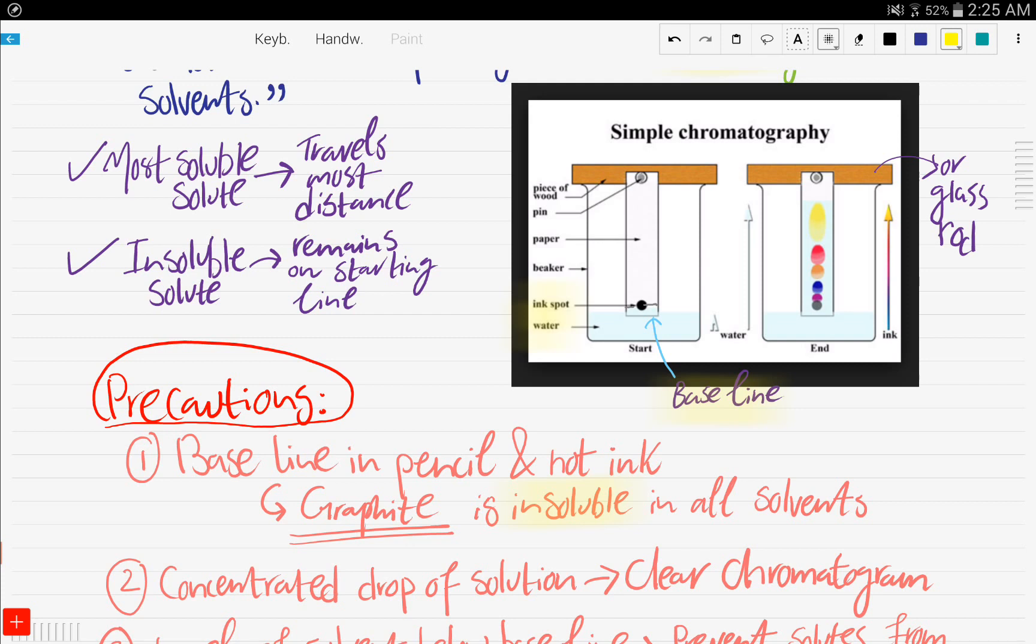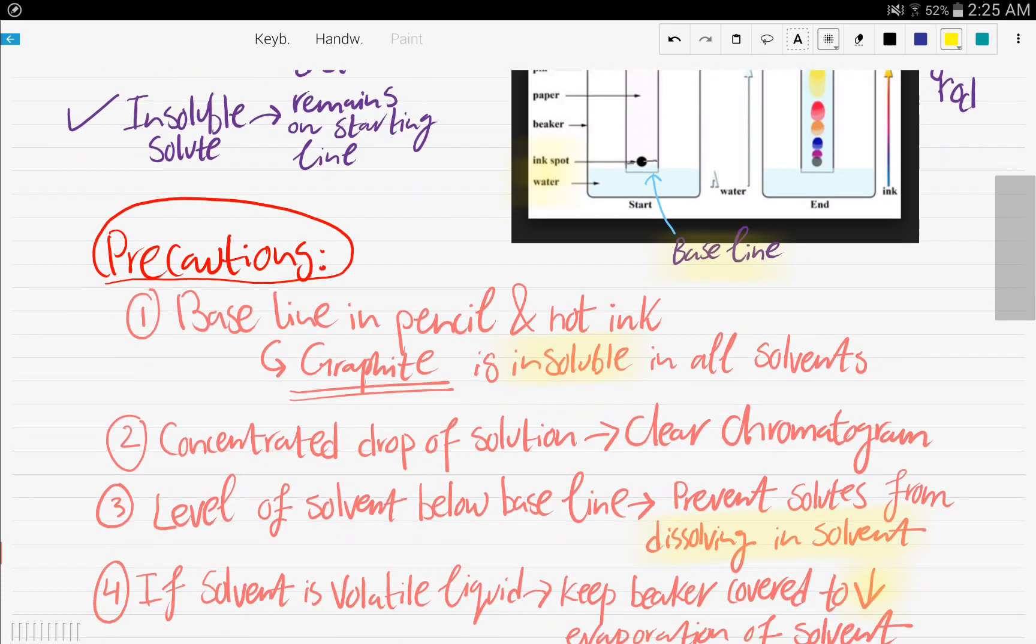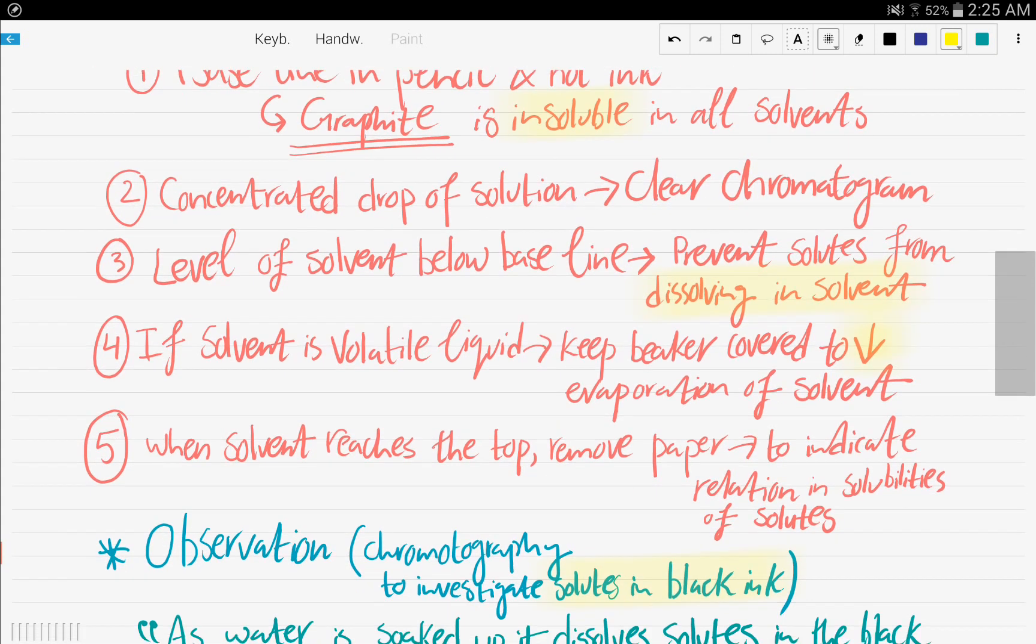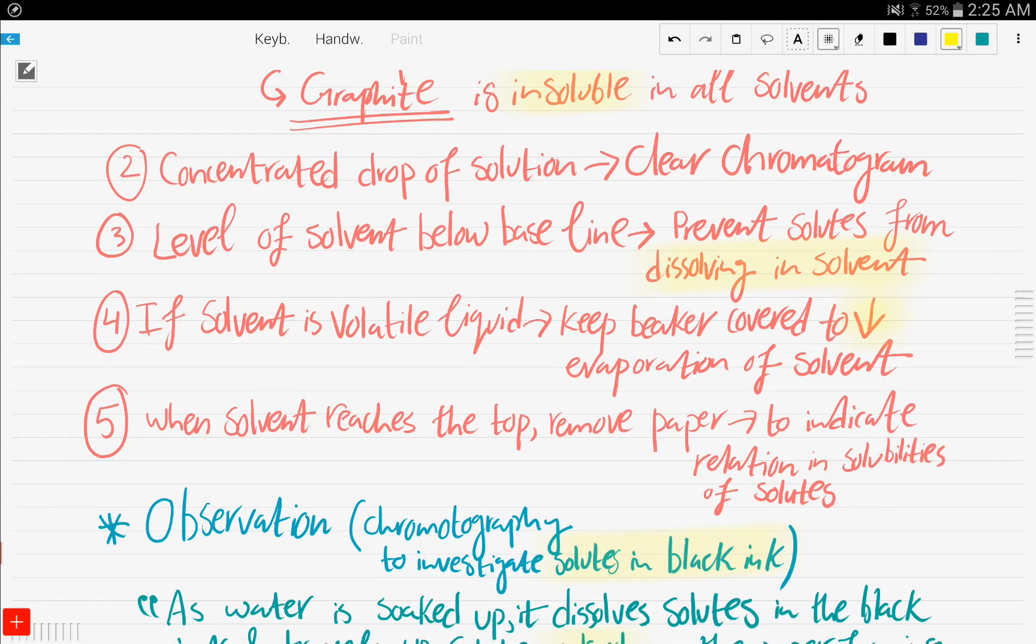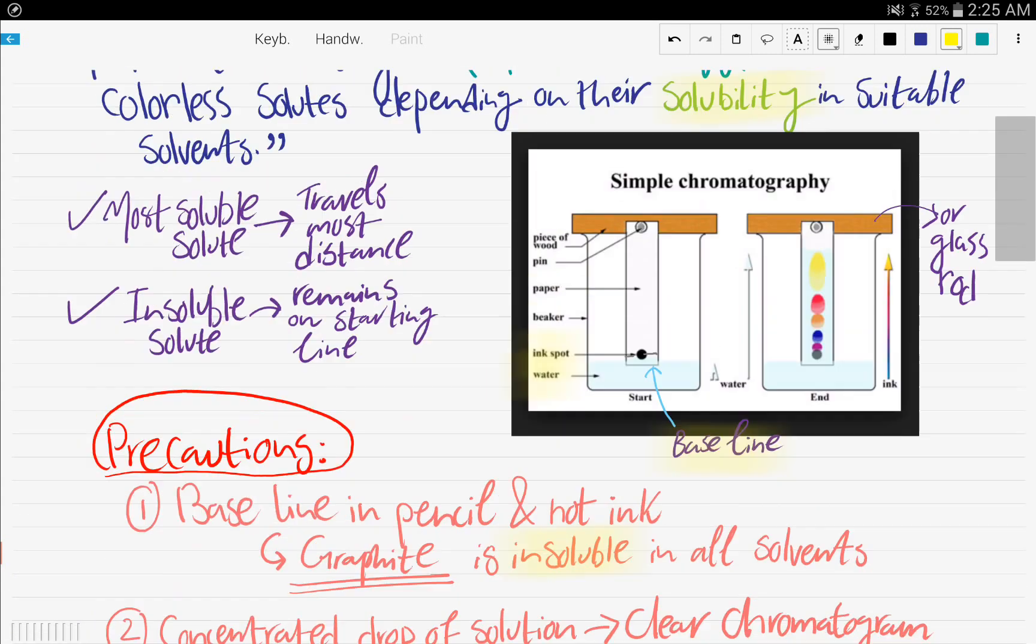Just already have a lid, but just in case, if you don't have, just put it, especially if it's a volatile liquid. When the solvent reaches the top, of course, you just remove the paper and try to indicate the relation in the solubilities of the different solutes.